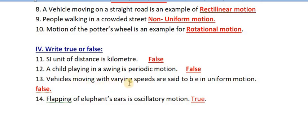Vehicle moving with a varying speed are said to be in uniform motion. Vehicle moving in uniform motion - this statement is false. The correct statement is in comment section.